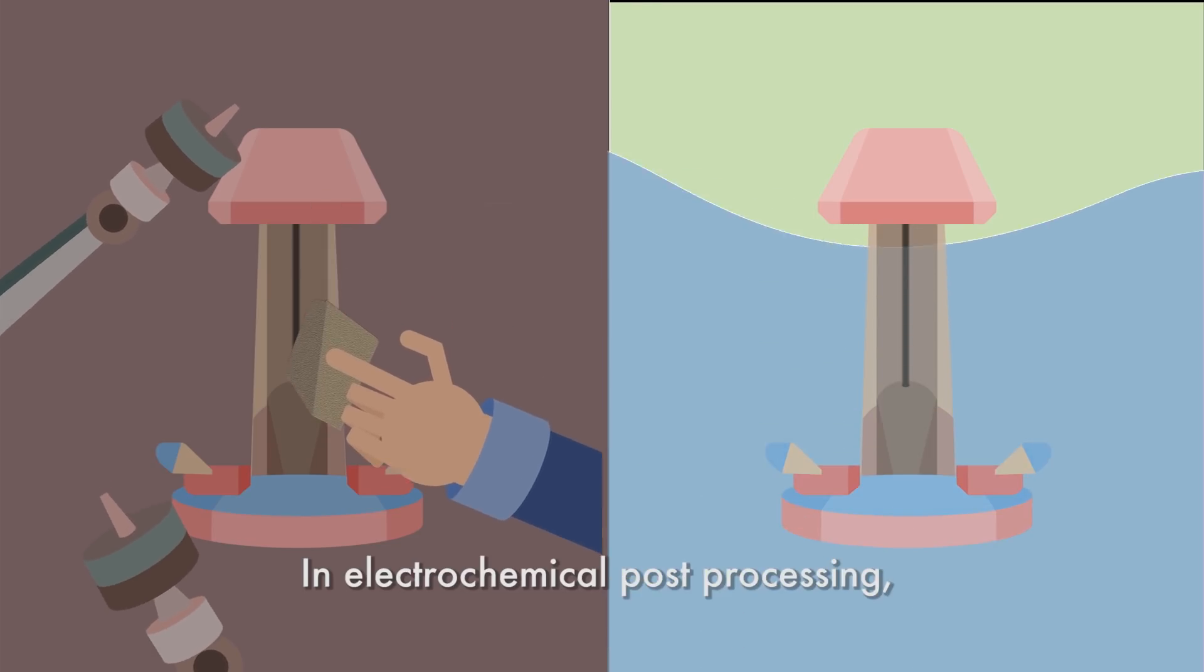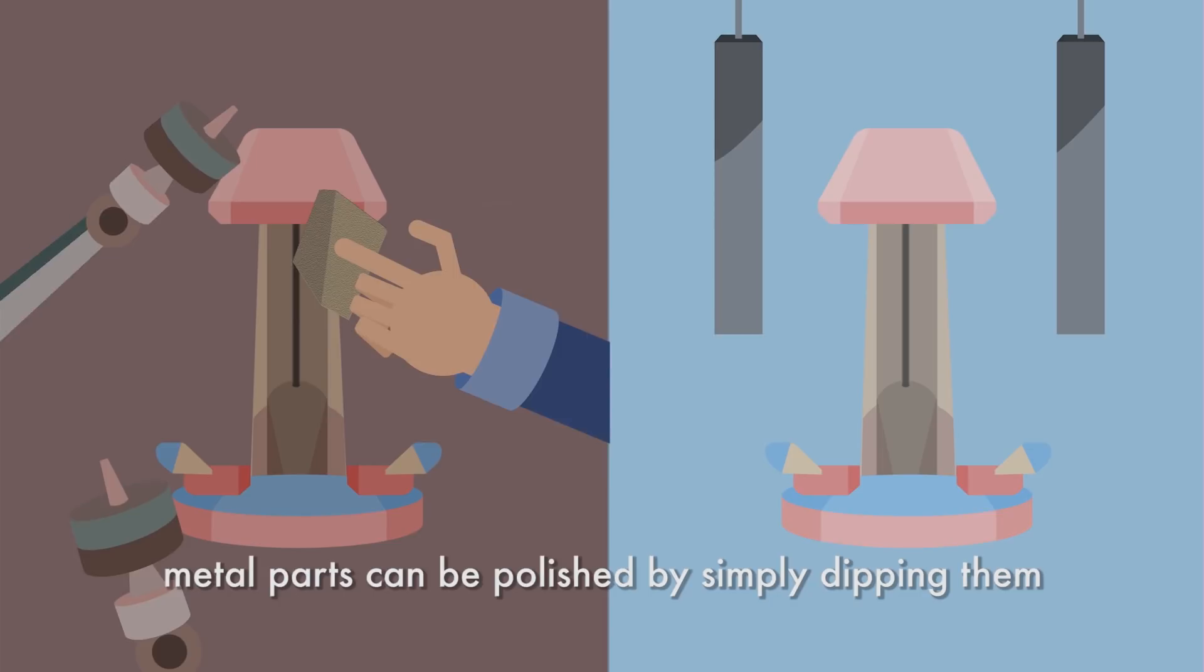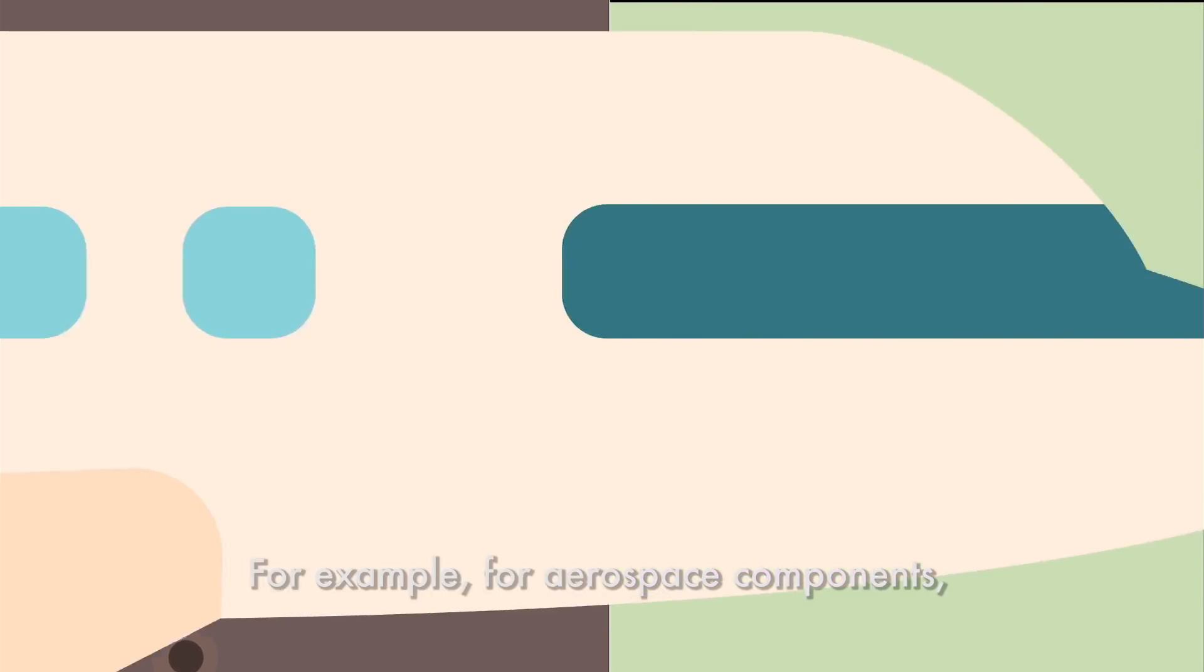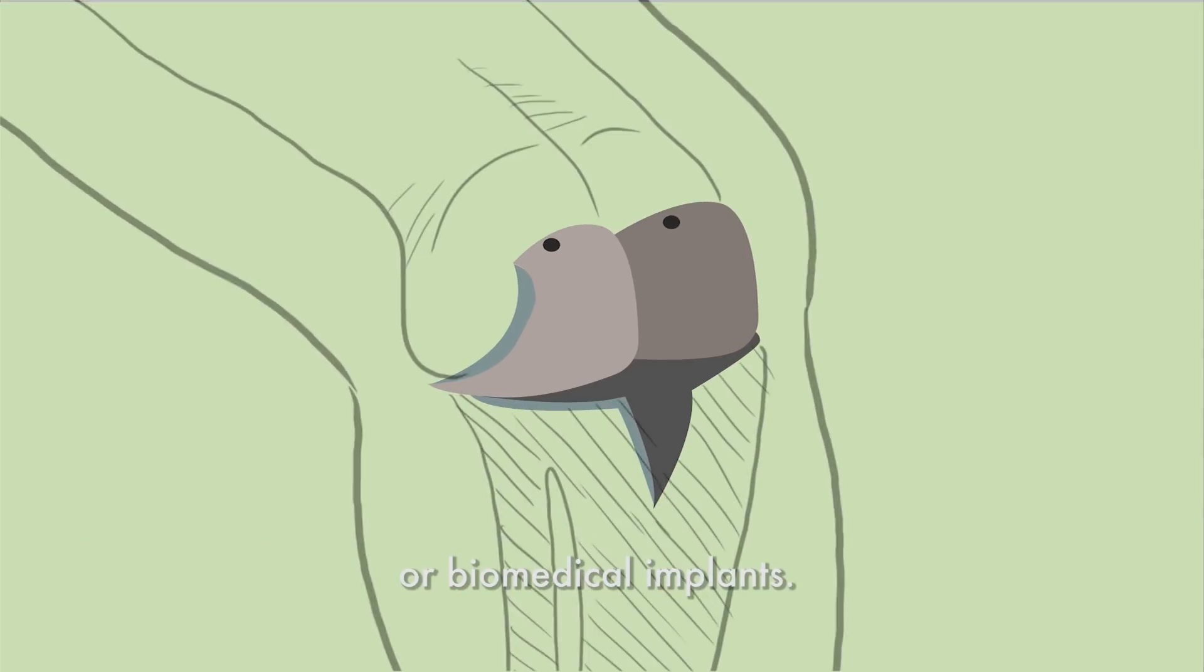Through electrochemical post-processing, metal parts can be polished simply by dipping them in an electric conductive solution. For example, for aerospace components or biomedical implants.